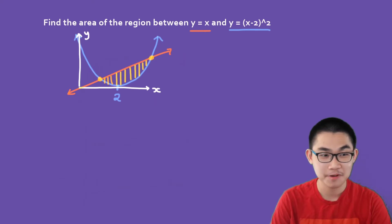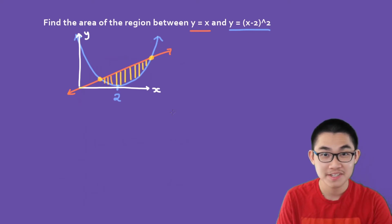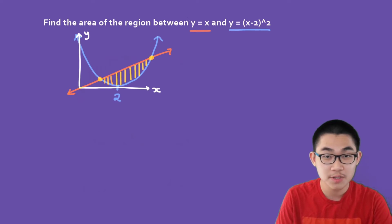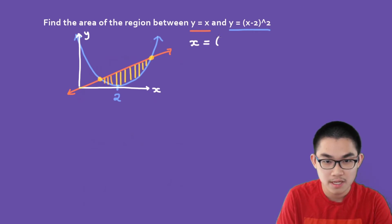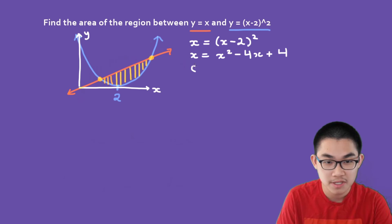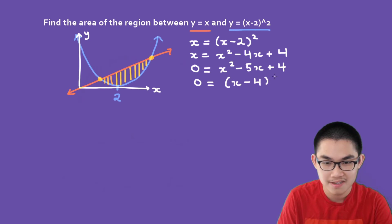Let's try a different example. Find the area of the region between y equals x and y equals (x minus 2) squared. The first thing we need to do is find a and b — the intersections of the two functions. Since y equals x and y equals (x minus 2) squared, we set them equal: x equals x squared minus 4x plus 4. Subtracting x from both sides: 0 equals x squared minus 5x plus 4, which factors as (x minus 4)(x minus 1). So x equals 1 and x equals 4.